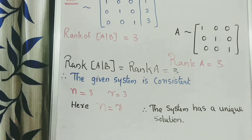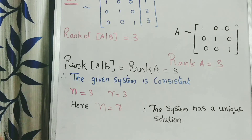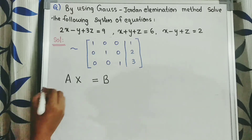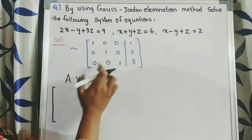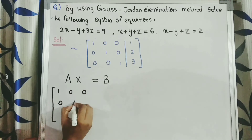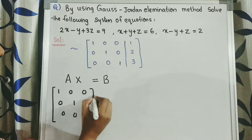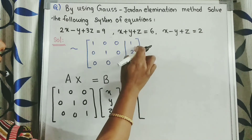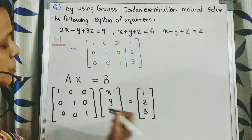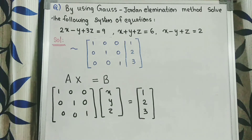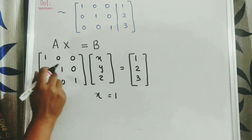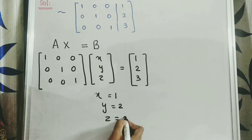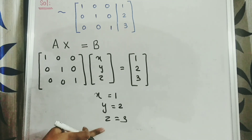To find the solution, we write the transformed equation AX equal to B. The transformed A is the identity matrix and transformed B is 1, 2, 3. Therefore: 1 times X gives X equal to 1, Y equal to 2, Z equal to 3. Therefore the solution is X equal to 1, Y equal to 2, Z equal to 3.